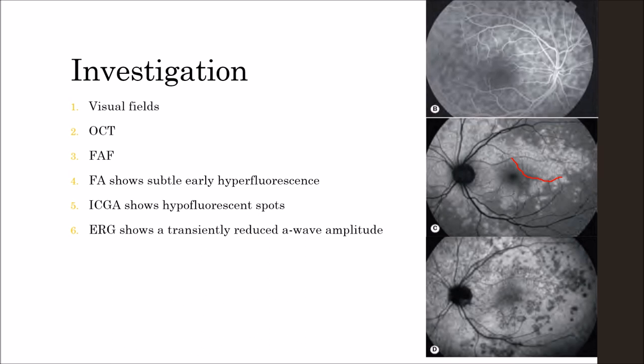Fluorescein angiography shows subtle early hyperfluorescence of the dots with late staining. In the arteriovenous phase, you can see hyperfluorescence of the spots, and vessel wall leakage and disc staining may also be seen.